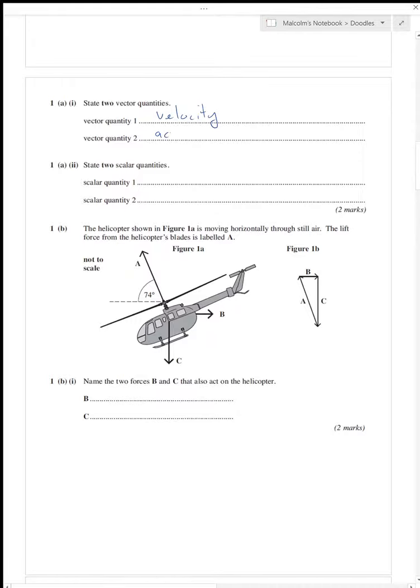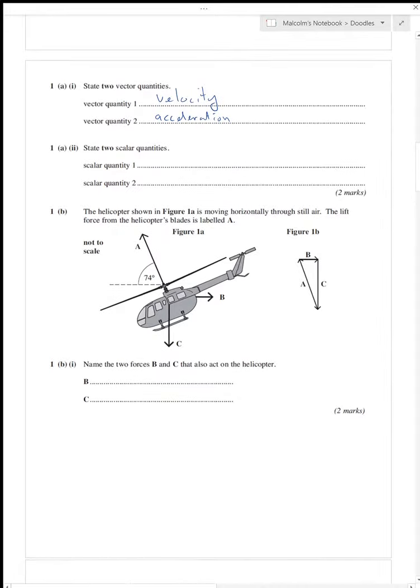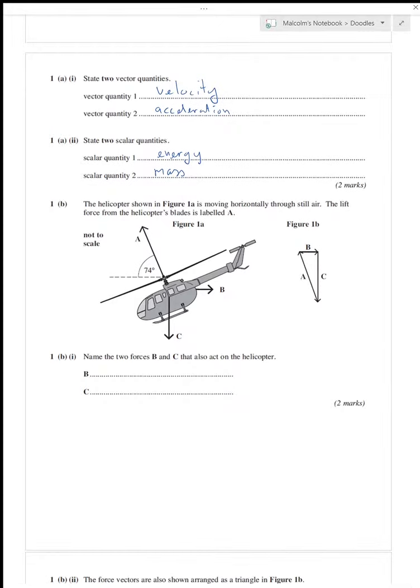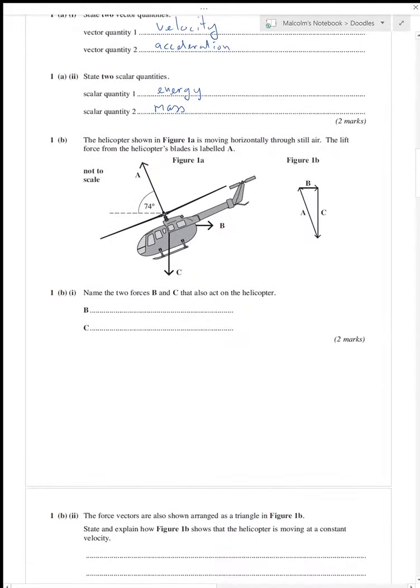I could have something like displacement, I could have force, as long as it has a direction, a physical direction, that's fine. Two scalar quantities - anything without direction. I'm going to go for energy. I could have something like speed, distance, I could have mass, I could have temperature. Anything with no relevant physical direction is fine.